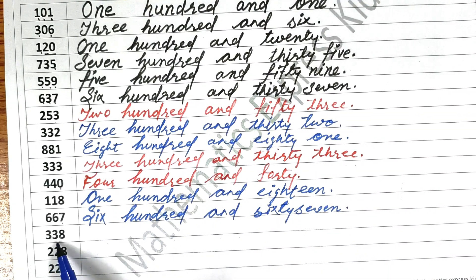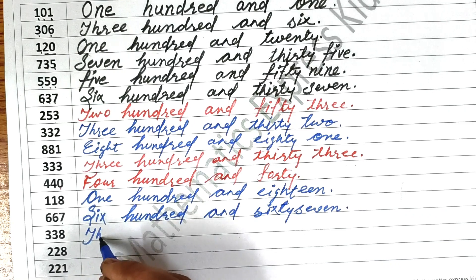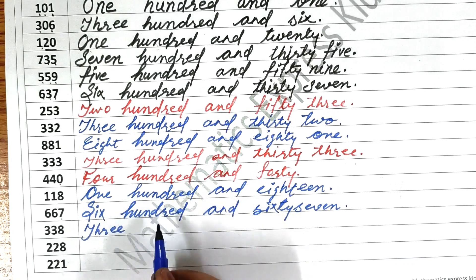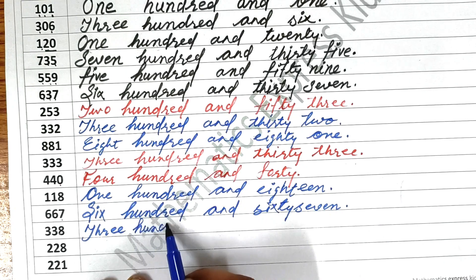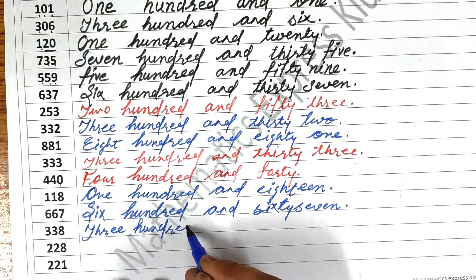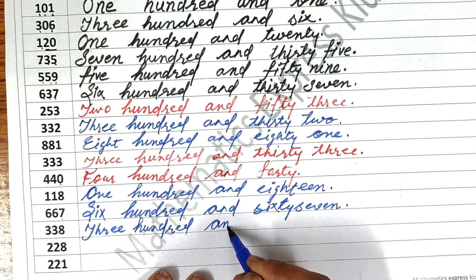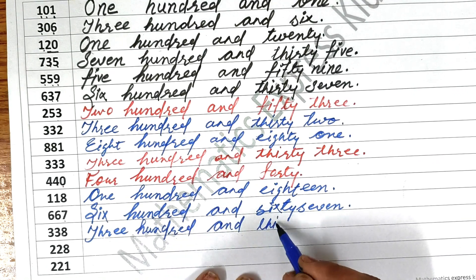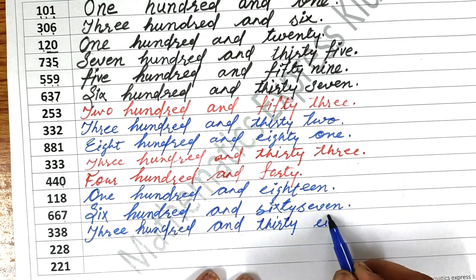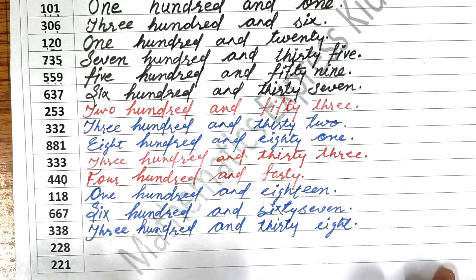Now come to the next one: three hundred and thirty-eight. Write three — T-H-R-E-E — three hundred — H-U-N-D-R-E-D — and thirty — T-H-I-R-T-Y — thirty-eight — E-I-G-H-T. Thirty-eight. Okay.